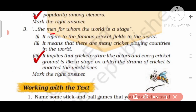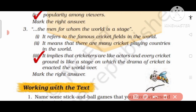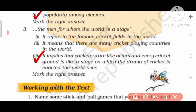Number 3: 'The man for whom the world is a stage' — yani wo aadmi jinke liye ye duniya ek stage hai — kis cheez ko refer karta hai? It implies that cricketers are like actors and every cricket ground is like a stage on which the drama of cricket is enacted the world over. So the correct answer is number 3.